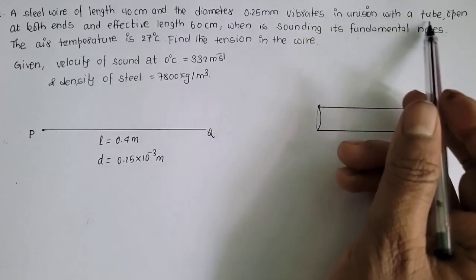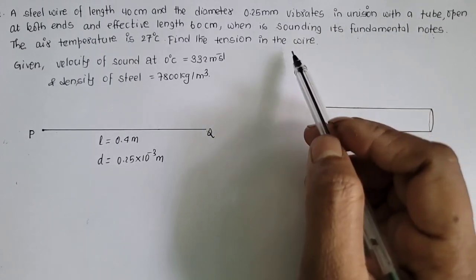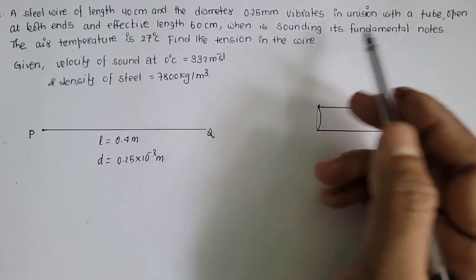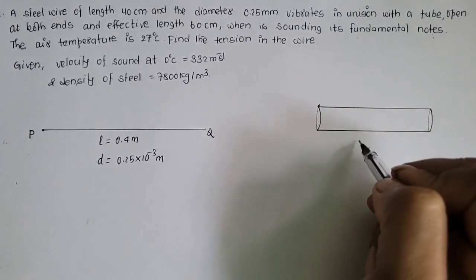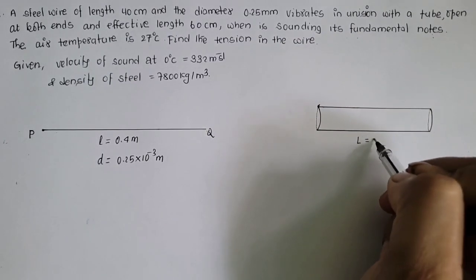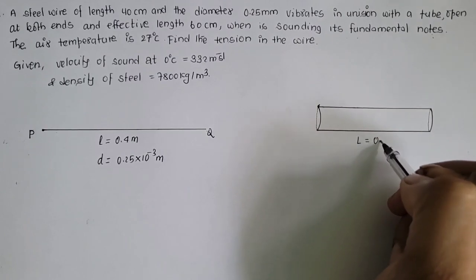Vibrates in unison with a tube open at both ends and effective length 60 cm, that means another tube sa, yasko length 60 cm which is 0.6 meter.